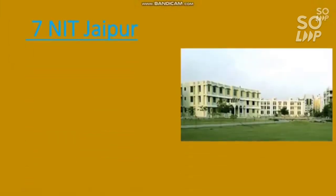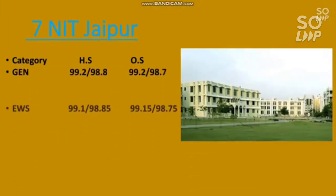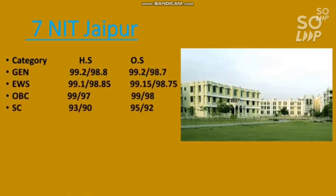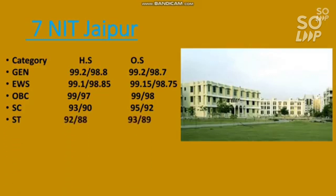Number seven is NIT Jaipur. The EC cutoff is: for General 99.2 percentile required, EWS 99.15, OBC 99, SC 95 percentile, and for ST 93 percentile required.